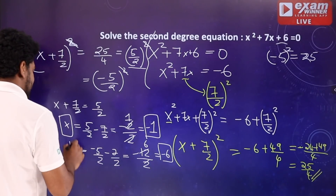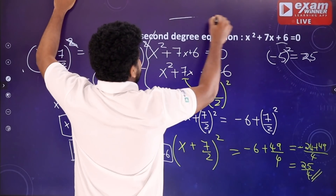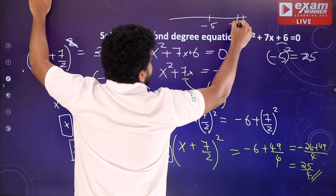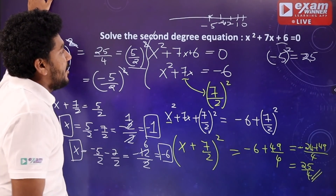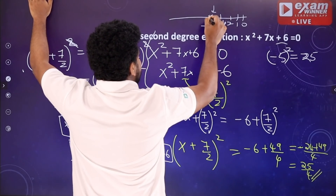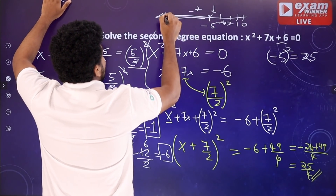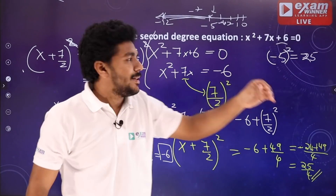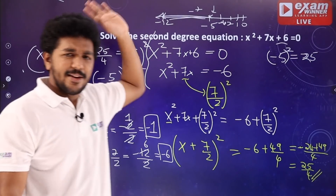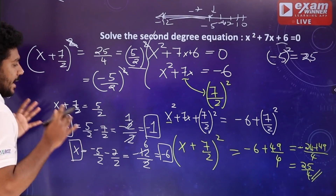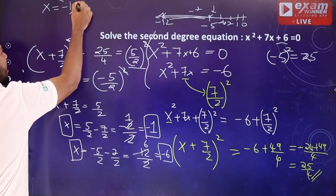When minus and minus: minus 5 minus 7 equals minus 12, and minus 12 by 2 is minus 6. So x equals minus 6 or x equals minus 1. These are the two solutions of the equation x² plus 7x plus 6 equals zero.